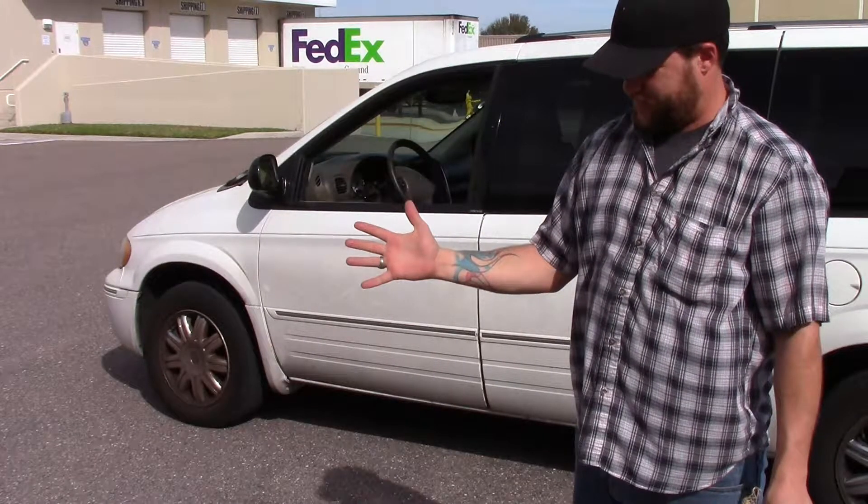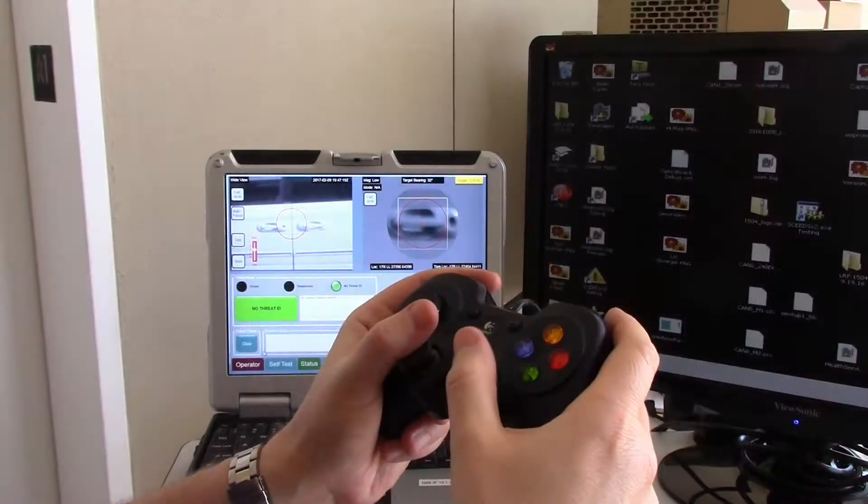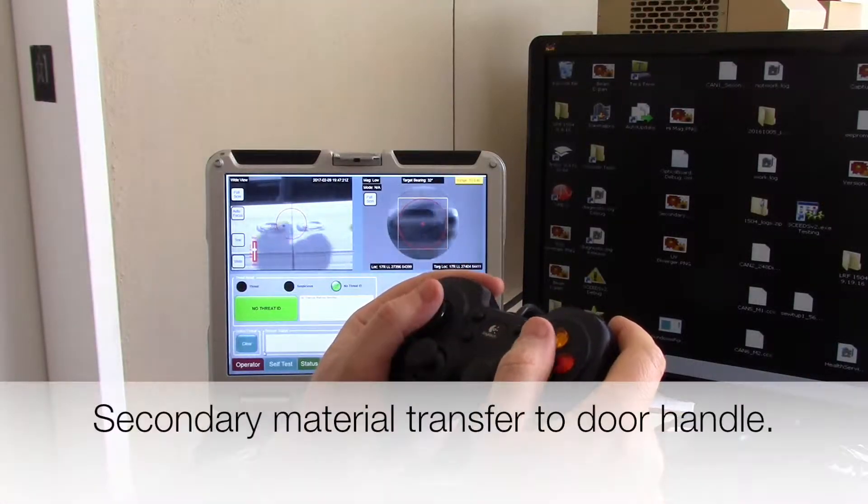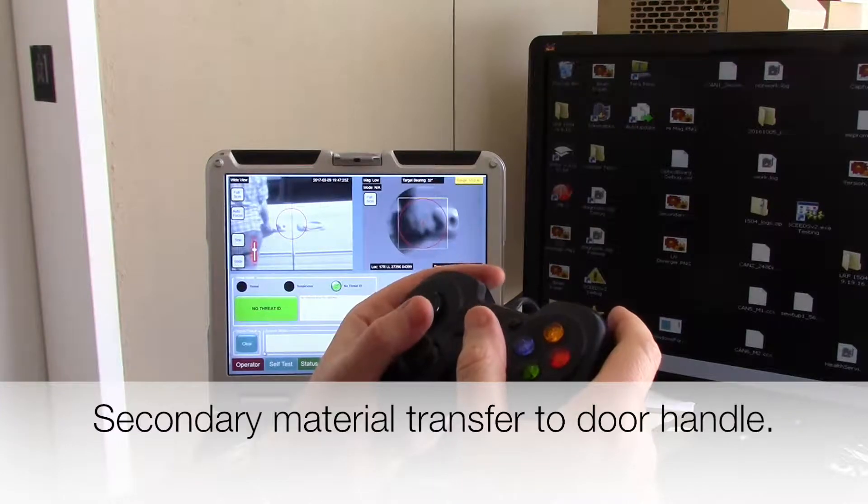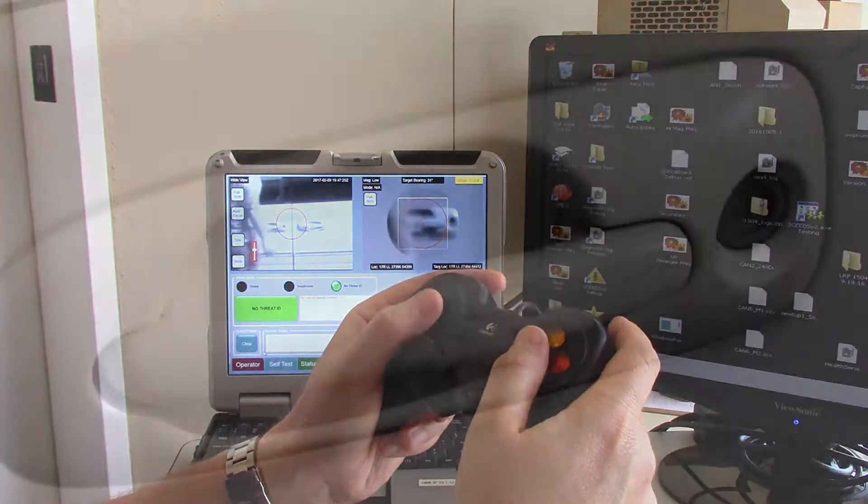This residue becomes a secondary residue when the uncleaned hand comes in contact with a car door handle. This secondary residue is only visible from extremely close ranges.